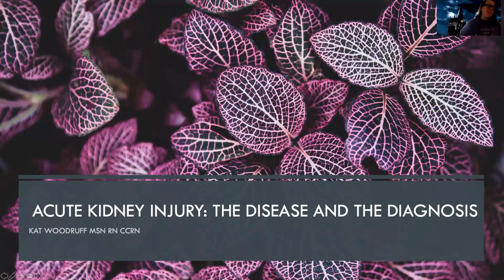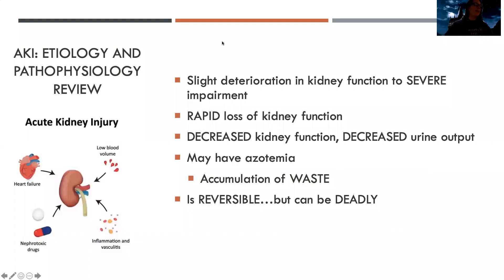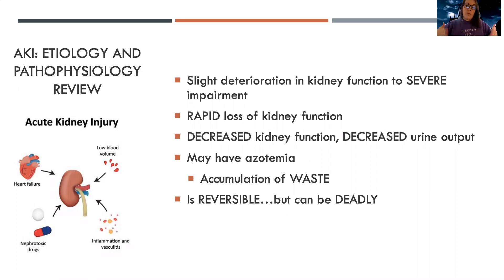Hi guys. Today we're going to be going over acute kidney injury - what it is and how we diagnose it. When we start talking about kidney disease, there are acute problems that are rapid, and there are also chronic issues. Acute can lead to chronic issues, but right now we're just going to focus on what happens when things are acute or sudden. There'll be other videos about the chronic issues.